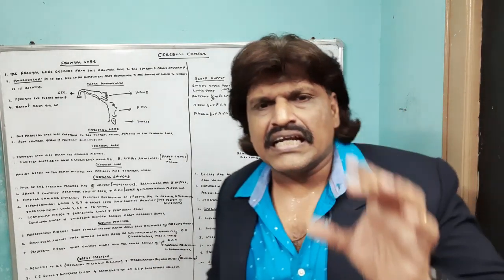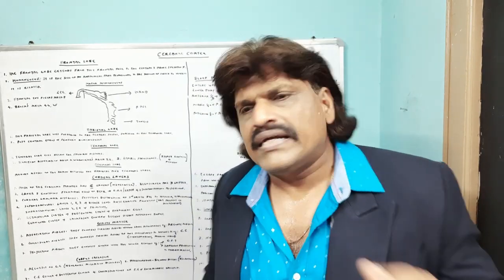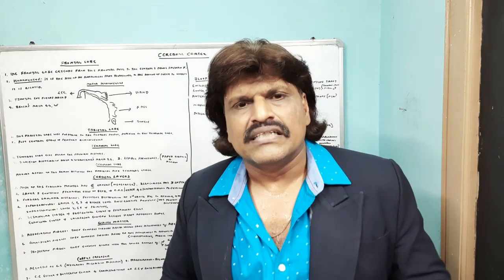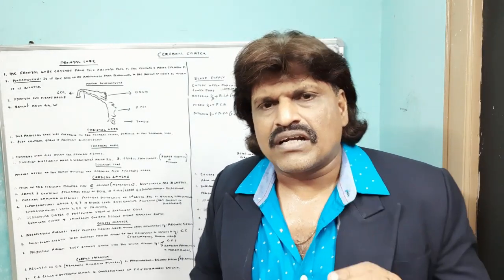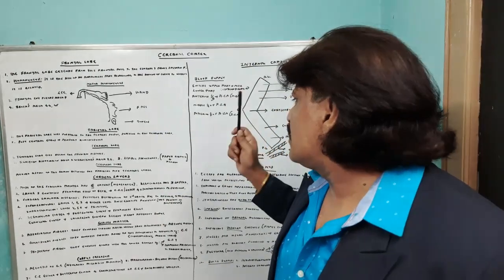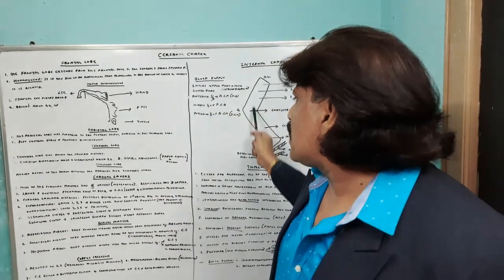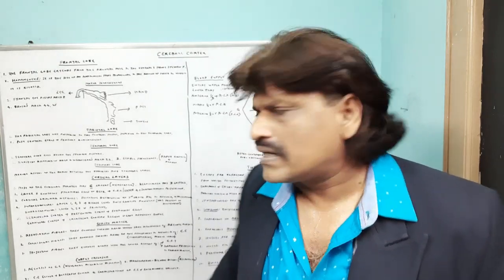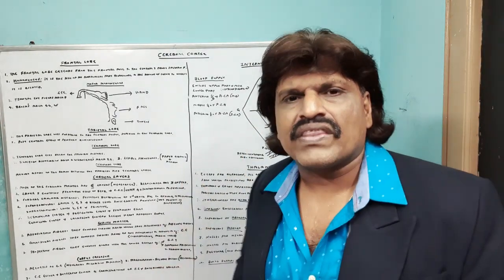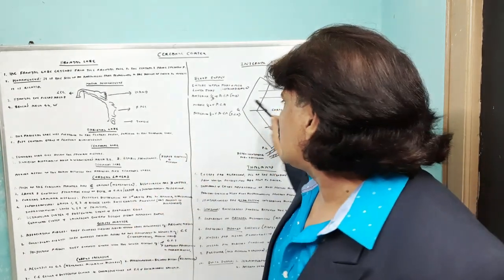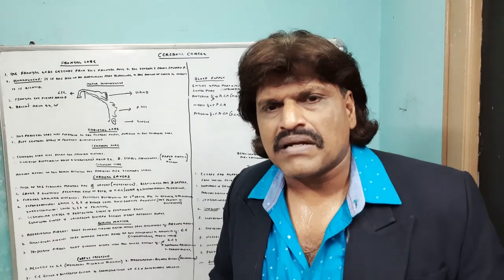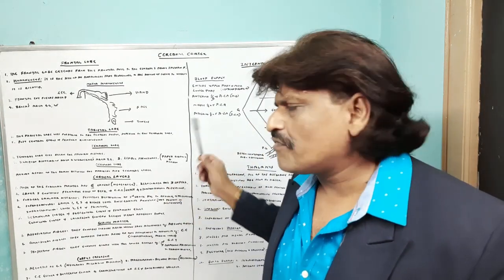The blood supply of the internal capsule is important. We can divide it into upper and lower parts. The entire upper part is supplied by the lenticulostriate arteries of the middle cerebral artery — one of the commonest sites for hemiplegia. The lower part is divided into thirds: the anterior one-third is supplied by the anterior cerebral artery (Heubner's artery), where the face and hand may be selectively affected causing facial-brachial monoplegia; the middle one-third is supplied by the posterior cerebral artery; and the posterior one-third is supplied by the anterior choroidal artery, a branch of the internal carotid artery.